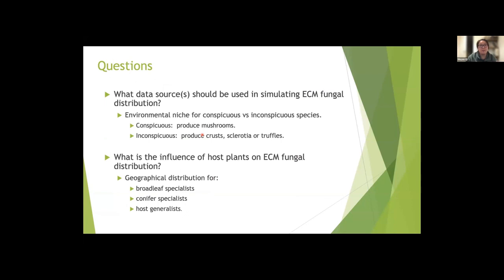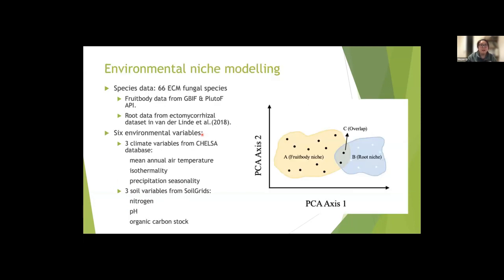So here are two questions for ectomycorrhizal fungal distributions: What data sources should be used in simulating ectomycorrhizal fungal distribution? And what is the influence of host plants on ectomycorrhizal fungal distributions? To answer the first question, I estimated the environmental niche for ectomycorrhizal fungi using two data sources. The ectomycorrhizal fungi were grouped into conspicuous and inconspicuous species. Conspicuous species are those producing mushrooms, and inconspicuous species are those producing crusts, truffles, and sclerotia. For the second question, I modeled the geographical distribution for broadleaf specialists, conifer specialists, and host generalists.